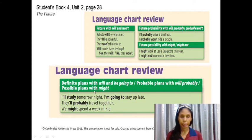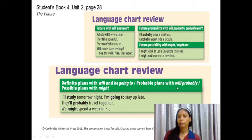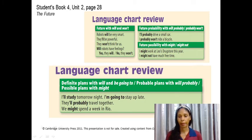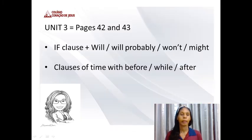To summarize: defined plans use 'going to,' probable plans use 'will probably,' and possible plans use 'might.'